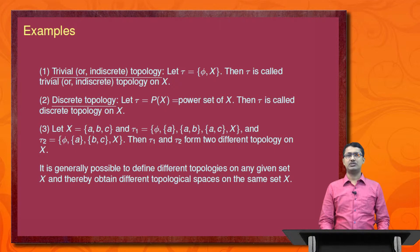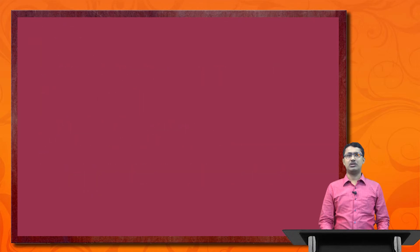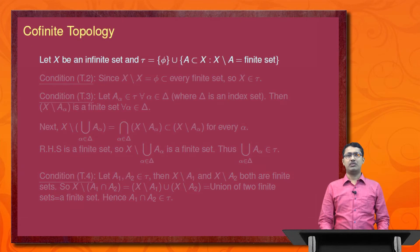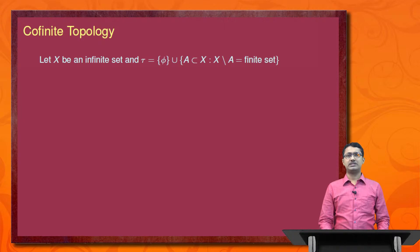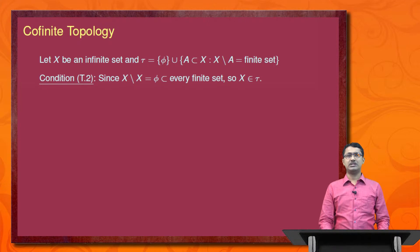Next we introduce a very important topology called the cofinite topology. Let X be an infinite set and tau = {phi} union {A : X minus A is a finite set}. Then condition 1 is obviously satisfied because phi belongs to tau. For condition 2, X minus X equals phi, and phi is a subset of every finite set, so X belongs to tau.